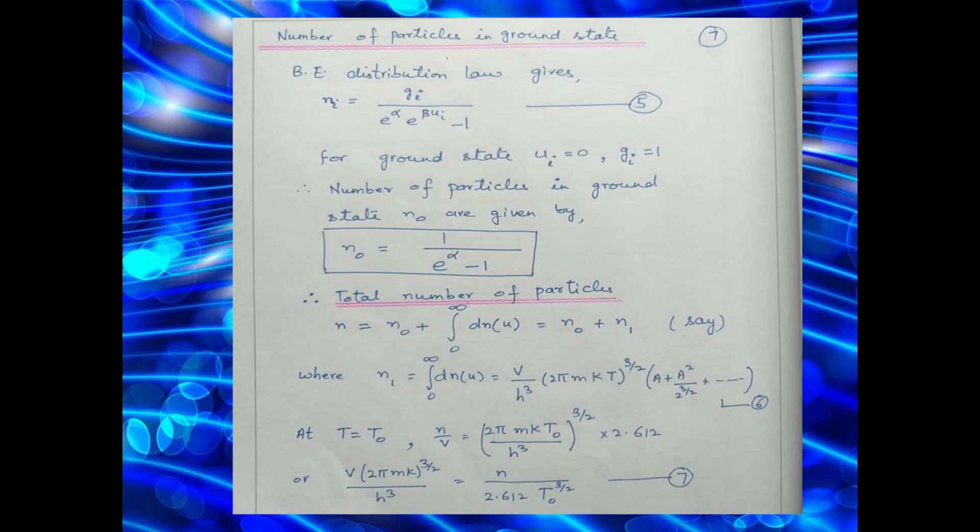Now the calculations for number of particles in ground state. The Bose-Einstein distribution law gives NI, number of particles in the ith energy level. It is equal to GI divided by E raised to power alpha E raised to power beta Ui minus 1. For ground state, Ui is 0 and GI is equal to 1. The number of particles in ground state N0 is equal to 1 over E raised to power alpha minus 1.